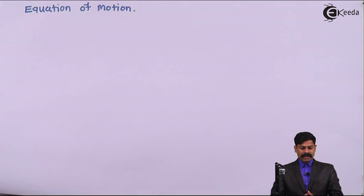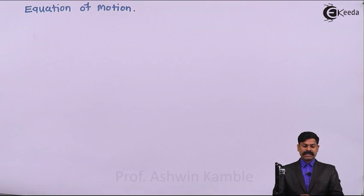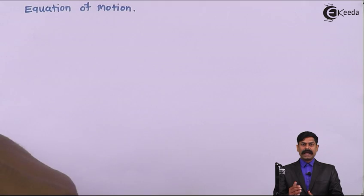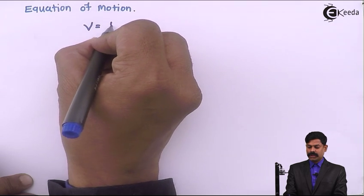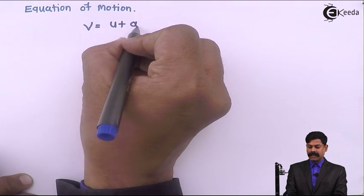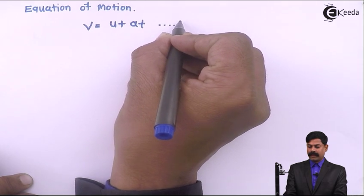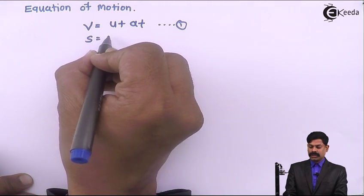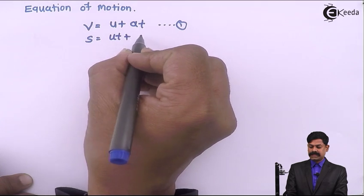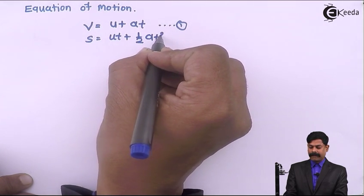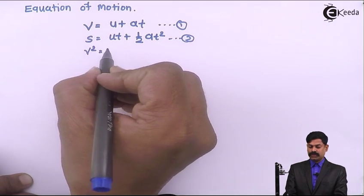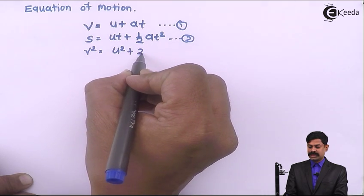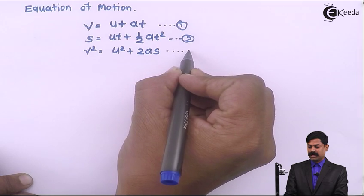Hello friends. The following equations of motion are used for a particle performing straight line motion. Equation 1: V equals U plus AT. Equation 2: S equals UT plus half times AT squared. Equation 3: V squared equals U squared plus 2AS.